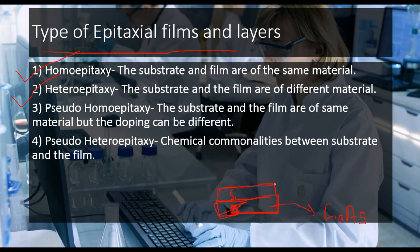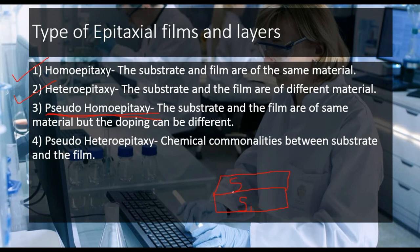Now we will deal with pseudo-homoepitaxy: the substrate and the film are of the same material, but the doping can be different. So if both substrate and film are silicon, the doping in the substrate and the doping in the film can differ. This is known as pseudo-homoepitaxy.